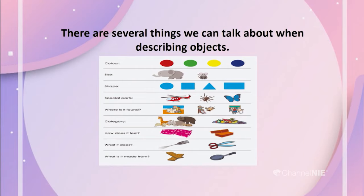We can talk about its color, the size, the shape, and special parts — for example, wings, paws, legs. Where is it found? The place — in a classroom, at the beach side. The category. How does it feel when you touch it or hold it? What it does, and what is it made of? Using these, we can describe an object.